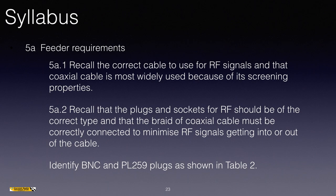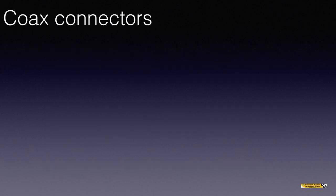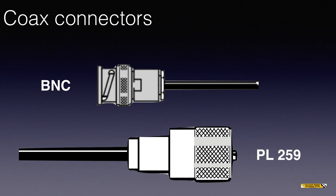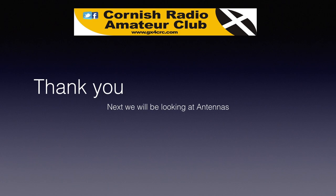Identify BNC and PL259 plugs as shown in Table 2. The BNC is of the bayonet type — you push it on and twist through about 45 degrees and it goes click. The PL259 is threaded, so you push it on and turn the collar round and round until it's tight. Not too much to feeders, but some key facts to remember. Thank you very much indeed — next time we will be looking at antennas.